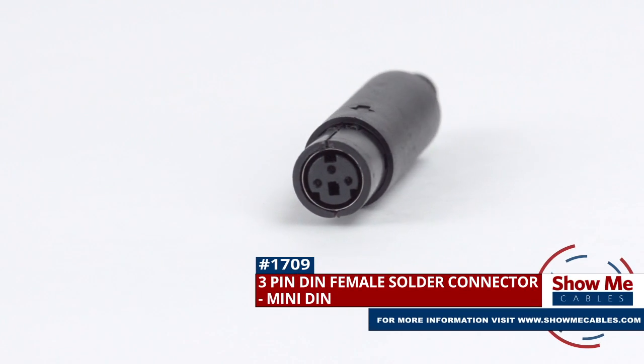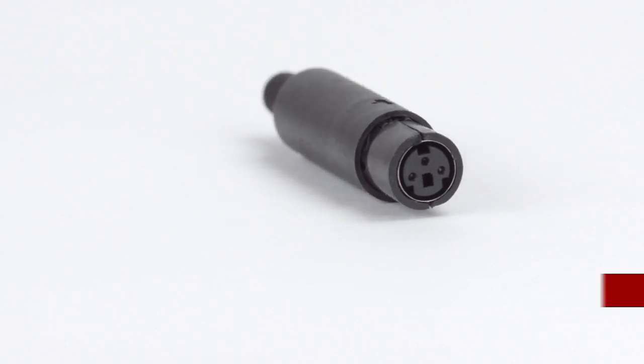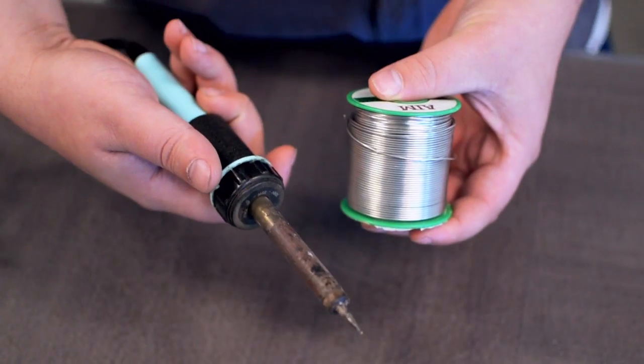This is the 3-pin Mini-DIN female solder connector. To install, you will need the following items: Low voltage cable, wire strippers, solder and soldering iron,